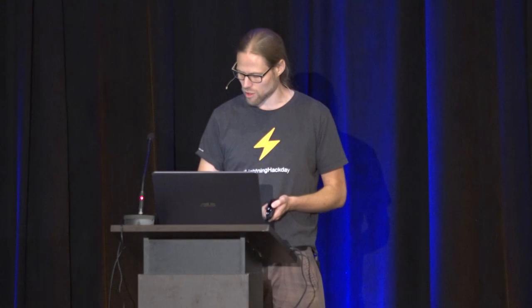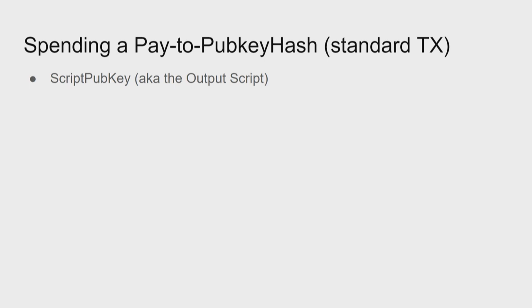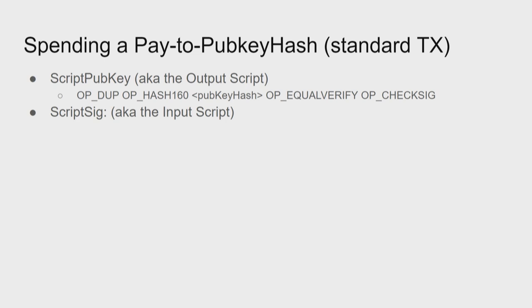I want to do one quick example of how the scripts in the Bitcoin scripting language work and how a Bitcoin transaction is really being transferred—spending a pay-to-public-key-hash transaction, the most simple Bitcoin transaction we currently see in the network. We have the script pubkey or output script: OP_DUP, OP_HASH, then some data which is the pubkey hash, OP_EQUALVERIFY, OP_CHECKSIG. And the script signature or input script for spending this output requires first a signature and then the pubkey.